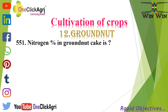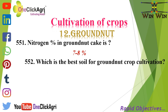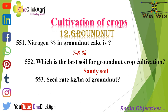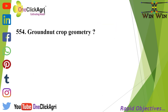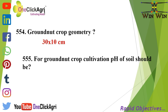Question 551: Nitrogen percentage in groundnut cake is 7 to 8 percent. Next question: Which is the best soil for groundnut crop cultivation? Sandy soil. Next question: Seed rate per hectare of groundnut is 100 to 120 kg per hectare.